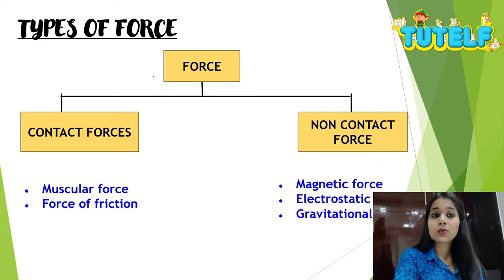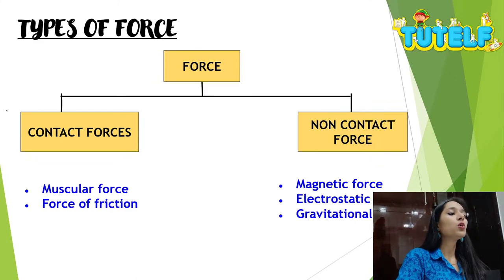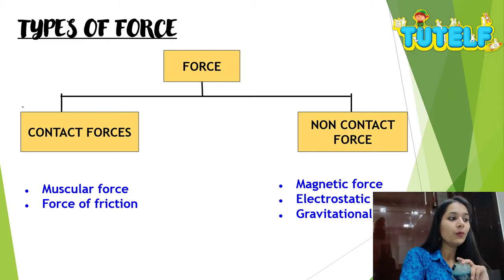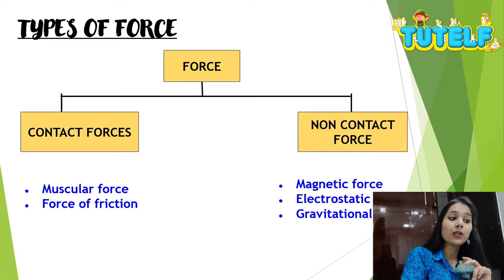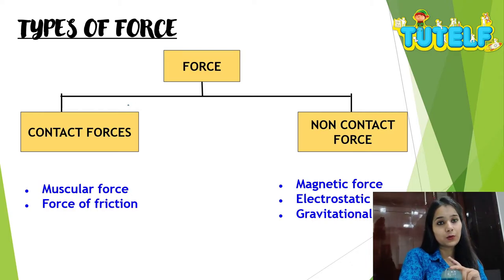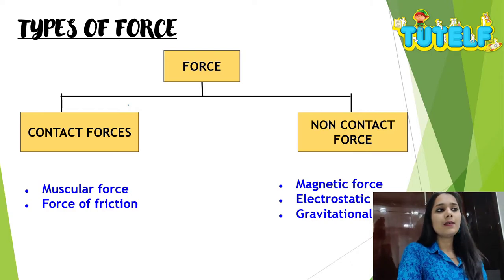Let's quickly see what sort of contact forces and non-contact forces we have. Contact forces: muscular force and force of friction. Non-contact forces: magnetic force, electrostatic force and gravitational force. Let's quickly summarize and understand each one of them.